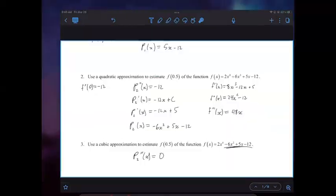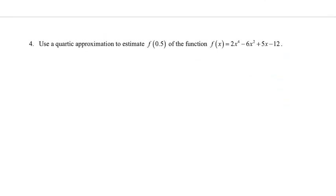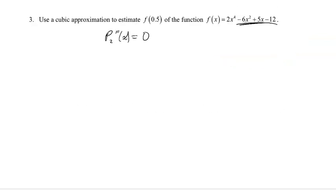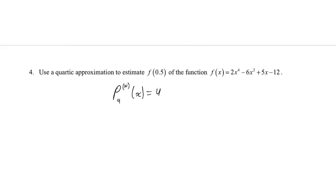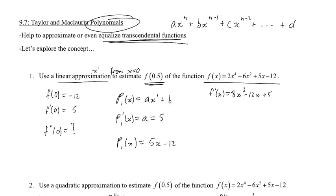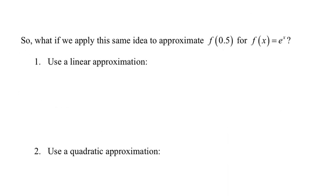Eventually we'll get to a quartic approximation which will actually be the function itself. The fourth derivative is 48, and the polynomial that represents a polynomial is the polynomial itself — this is a silly exercise we wouldn't normally do, but it's more meaningful for functions like e^x or sin x.